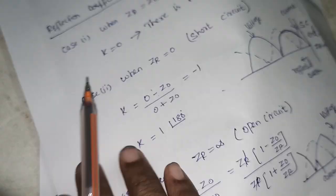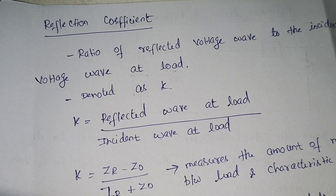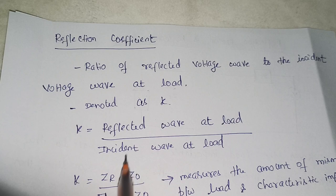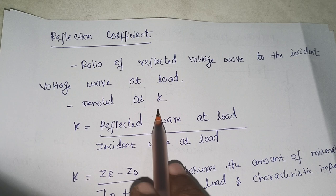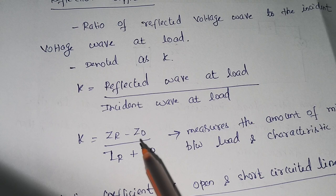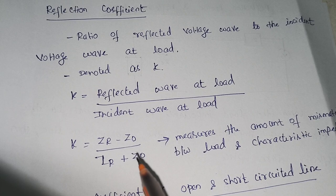Now let us see what is reflection coefficient. This reflection coefficient is the ratio of the reflected voltage wave to the incident voltage wave at the load. It is defined as reflected wave at load to incident wave at load. Usually it is represented as K and is given as K = (ZR − Z0) / (ZR + Z0), where ZR is the load impedance and Z0 is the characteristic impedance. This reflection coefficient helps us measure the amount of reflection taking place between the load and the source.